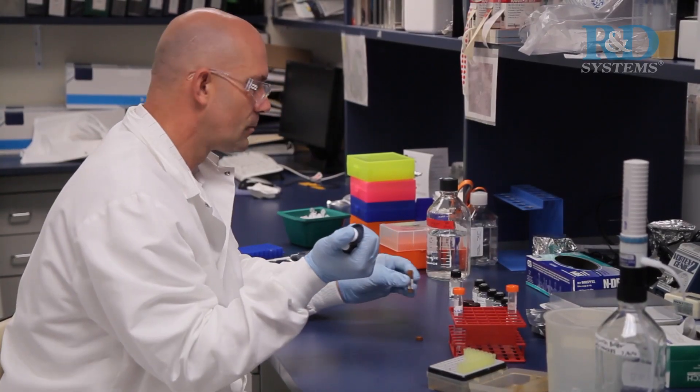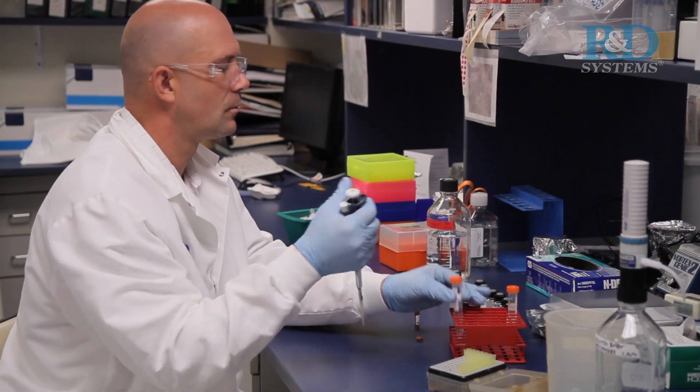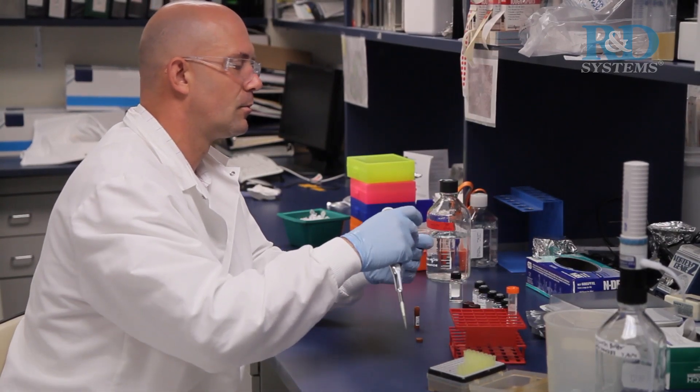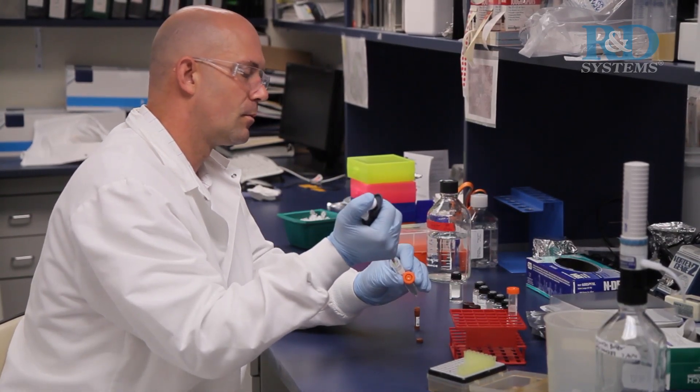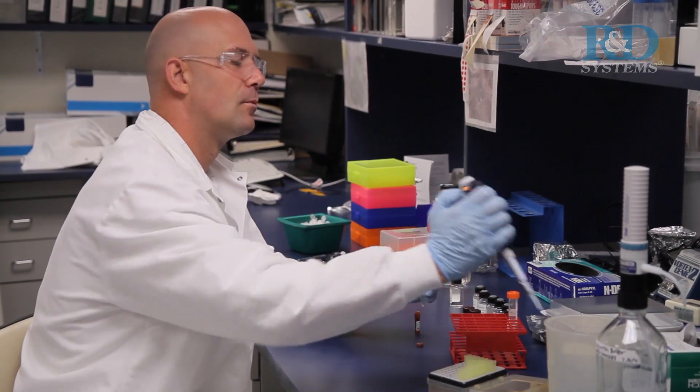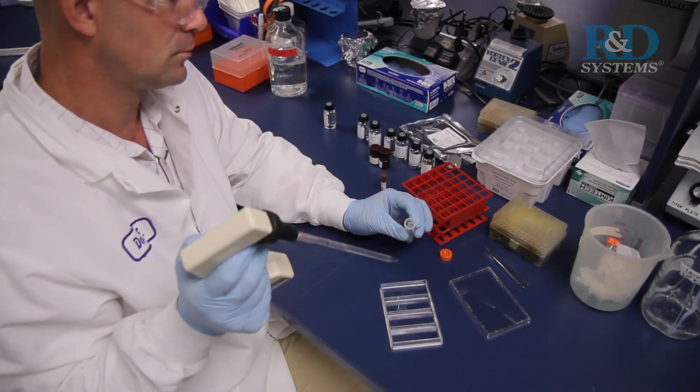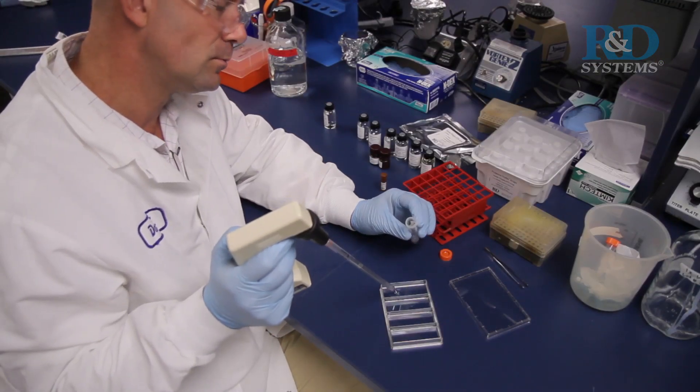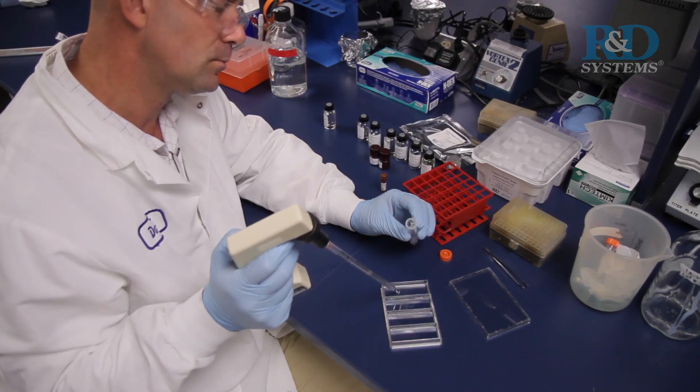Dilute the antiphosphotyrosine horseradish peroxidase detection antibody in 1x array buffer 2 using the dilution factor on the vial label. Pipette 2.0 milliliters of diluted solution into each well of the 4-well multi-dish.